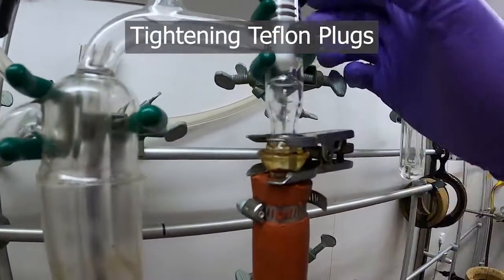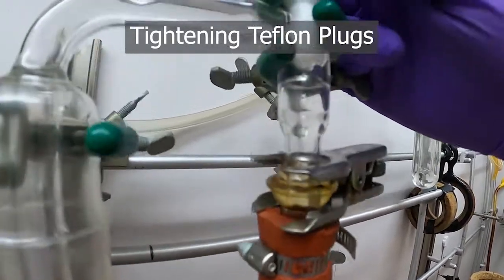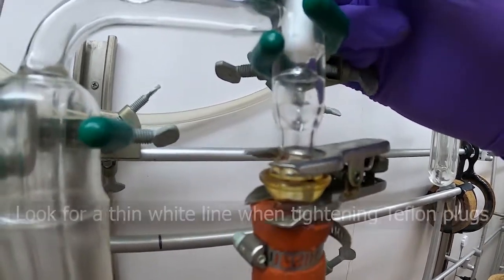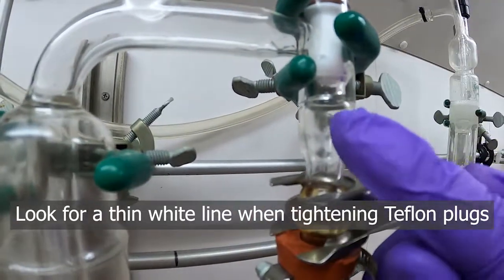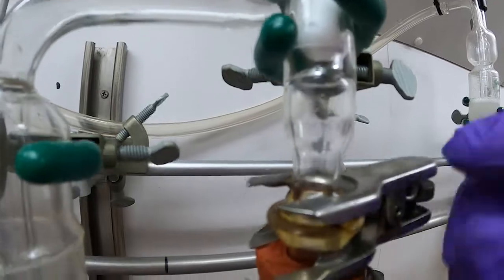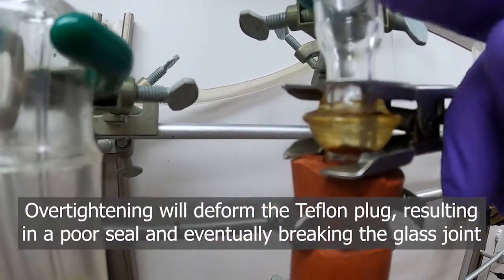So Teflon stoppers are notorious for being easy to over-tighten. You can look at the stopper itself and you can see this kind of thin white line up here on the glass. You can see that that means you've got a good seal, and that's all it takes. If you go farther beyond that, you can actually destroy the end of the stopper, which will make the seal worse in the future.